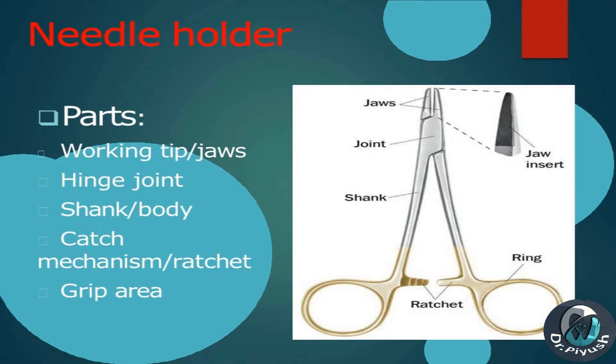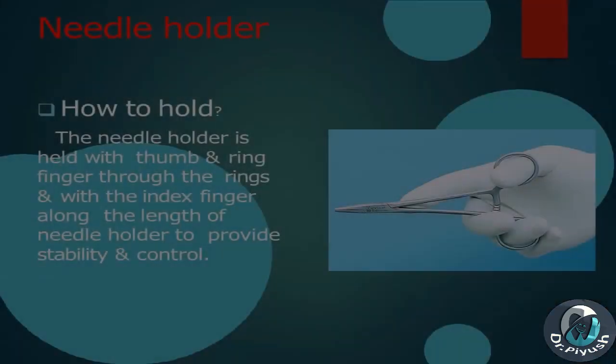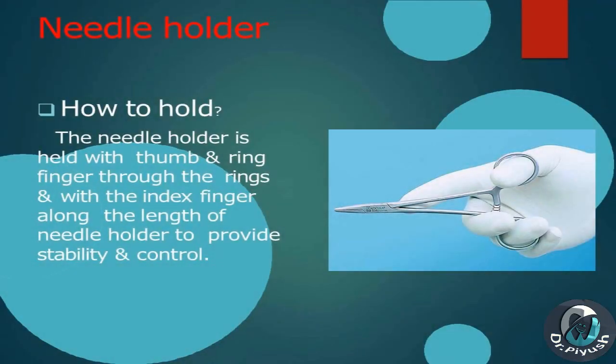Biological behavior depends upon the constituent of raw material. Armamentarium of suturing includes: needle holder, eye suture needle, and suture material. Needle holder parts: working tip, jaws, hinged joint, shank, body, catch mechanism (ratchet), and grip area.